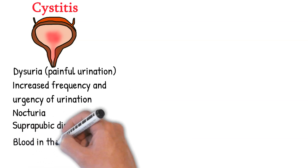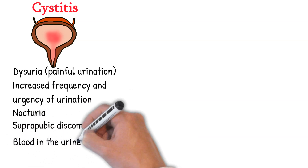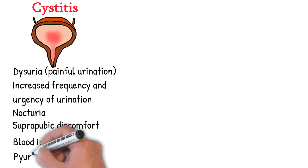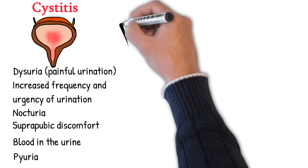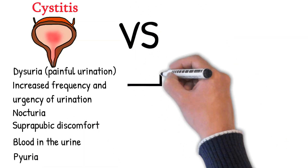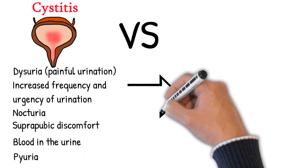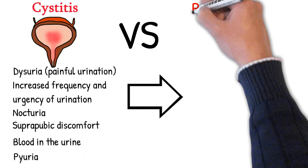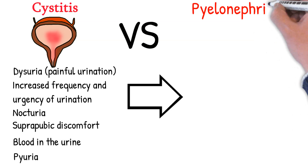Suprapubic discomfort caused by urinary bladder irritation. Gross visible hematuria — blood in the urine. Pyuria — pus, white blood cells in the urine.